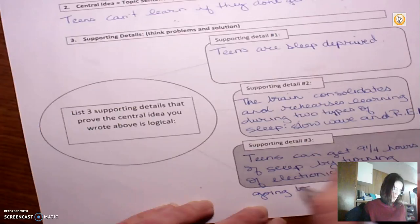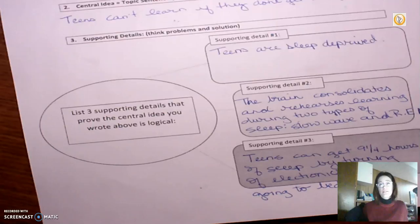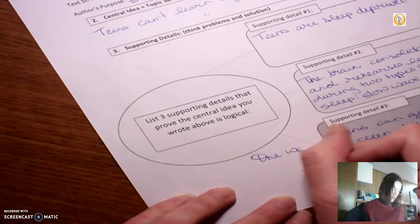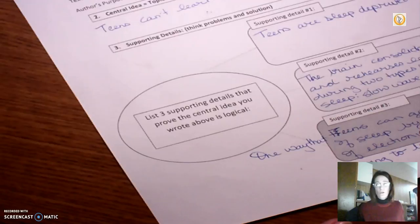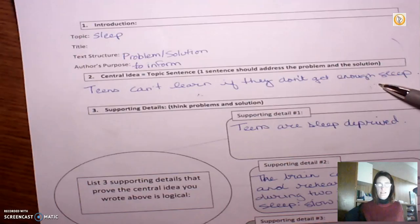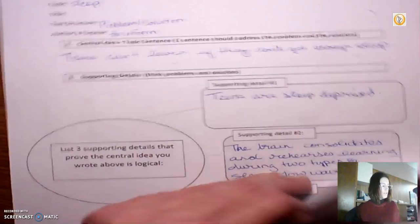So as I look at this, what I'm noticing is that this is only one solution for teens to get enough sleep. Obviously, there's a number of reasons we don't get enough sleep. And this seems a little too simplistic for me. So I think what I'm going to do is I'm going to change the beginning a little bit. I'm going to say that one way that, and of course, instead of a capital T, I need a lowercase T. One way that teens can get nine and a half hours of sleep is by turning off electronics before going to bed. Okay, so we've got our introduction. We have our topic sentence or central idea. We have three super solid supporting details.